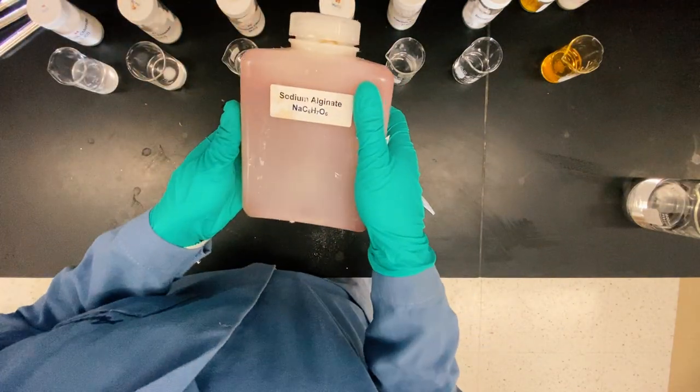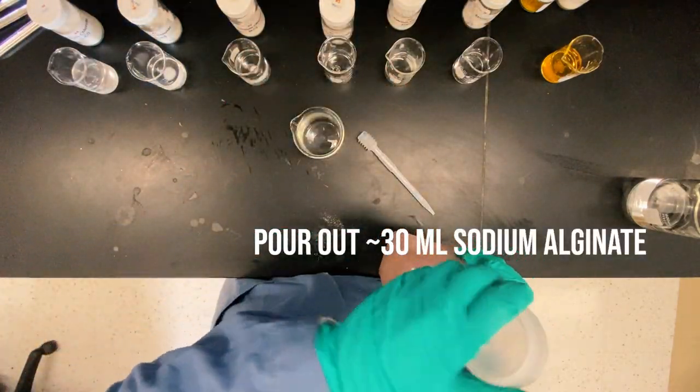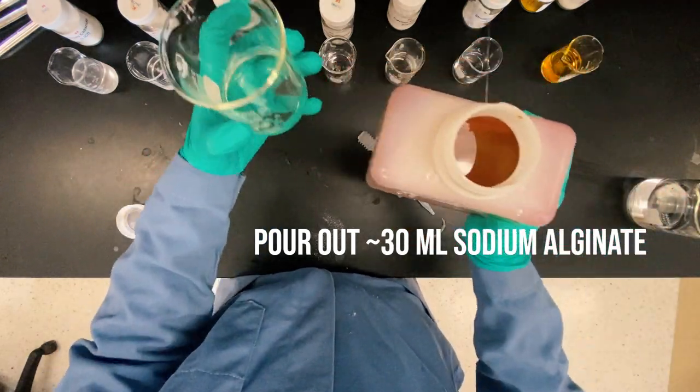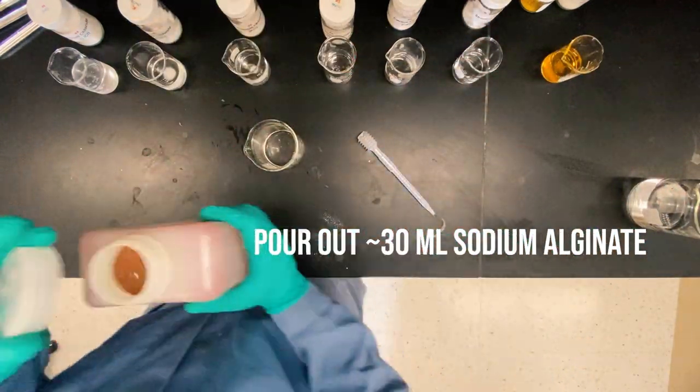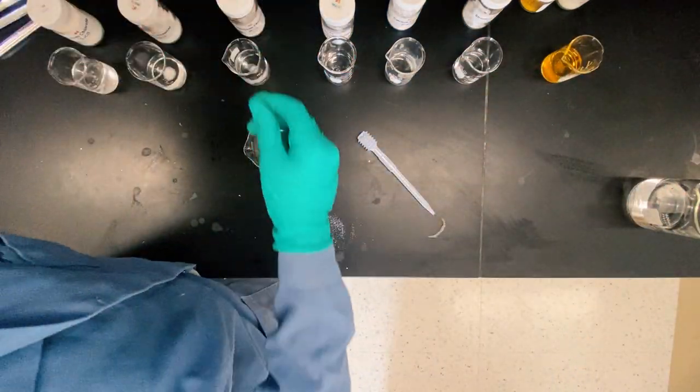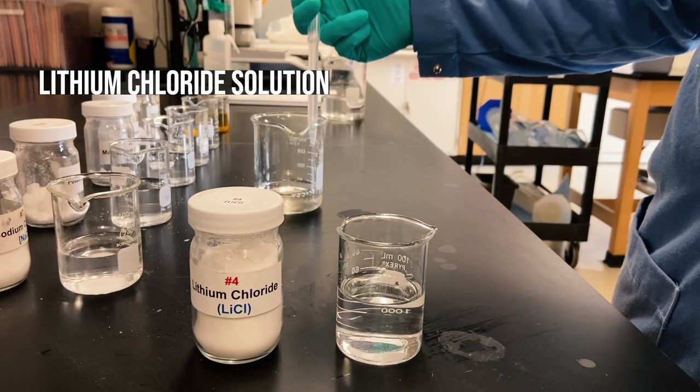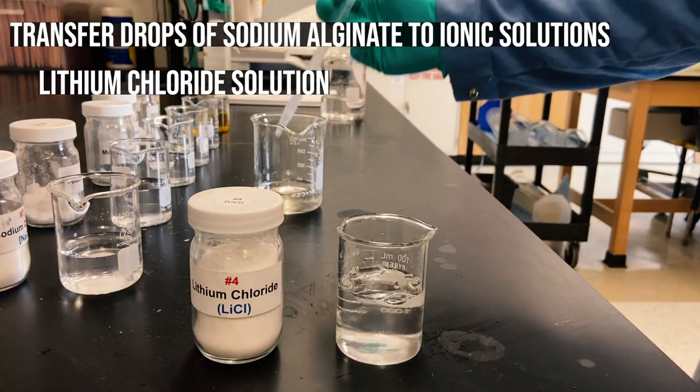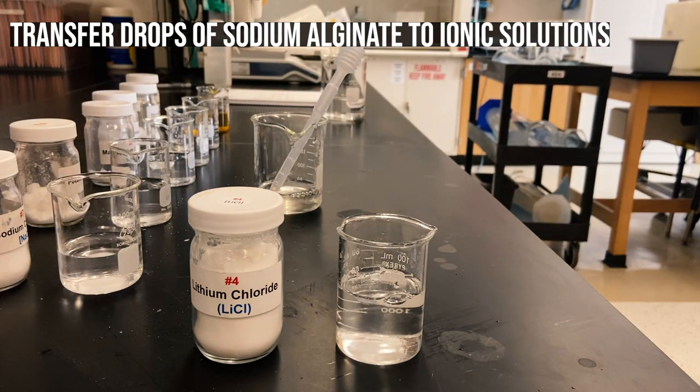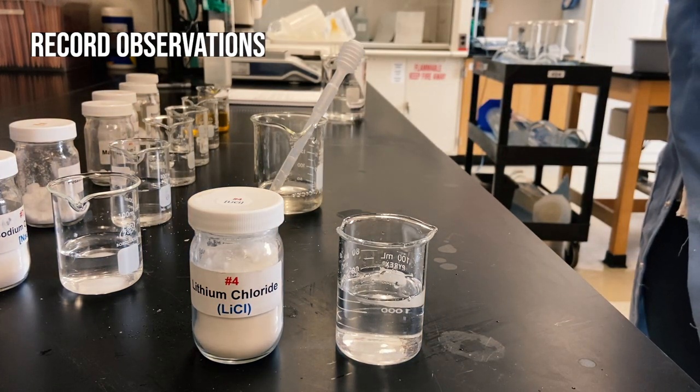So I've got the sodium alginate and I'm going to pour out about 30 milliliters of that, and I've also got a disposable dropper here. All right, our first ionic solution is lithium chloride, and I transferred some drops of sodium alginate into the solution and I'm going to see what happens.